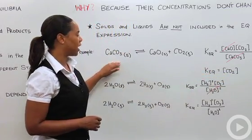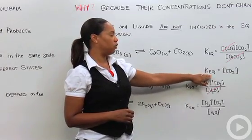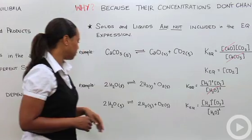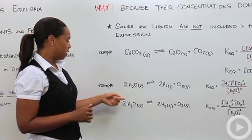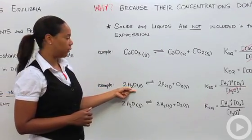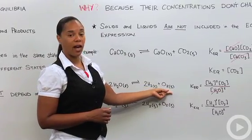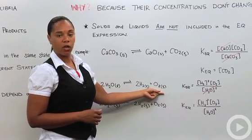So for this particular reaction, your KEQ would only be based on the concentration of carbon dioxide. For another example, let's say we had pure water liquid decomposing to form hydrogen gas and oxygen gas. Again, we'd write the equilibrium expression.